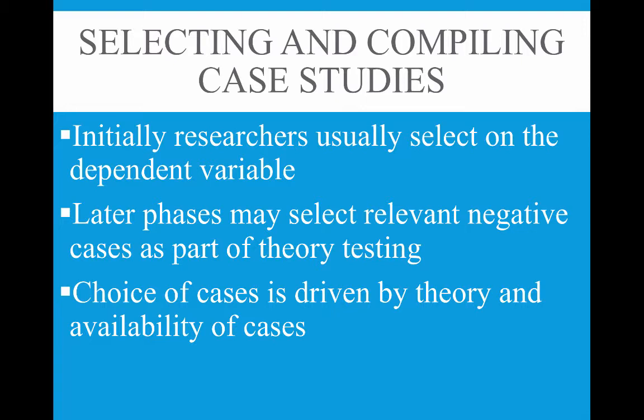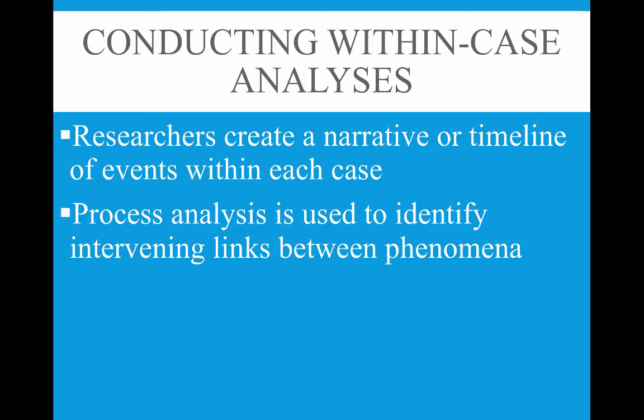A lot of what comparative historical researchers use is information from historians or archival research. The first step in comparative historical analysis is creating a narrative or timeline of events within each case, providing a chronological account of the process that led to changes. Process analysis is used to identify intervening links between phenomena — for example, researchers linked the political strategy of 'law and order' and the War on Drugs as linked to the rapid increase in incarceration.